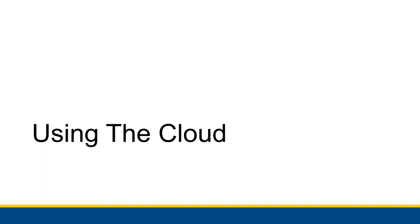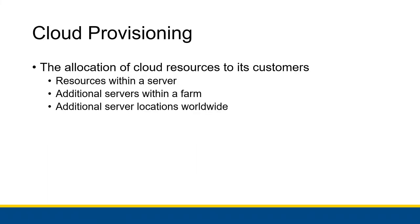In this video we are going to go into some examples of how businesses actually might take advantage of cloud technology. Before we get into some of this, I want to define the term cloud provisioning. It is the allocation of cloud resources to its customers. A cloud vendor has a lot of different customers using all that server space for different things, and has to determine how to provision all of those resources so that each customer has enough to maintain whatever they're trying to do on the cloud.